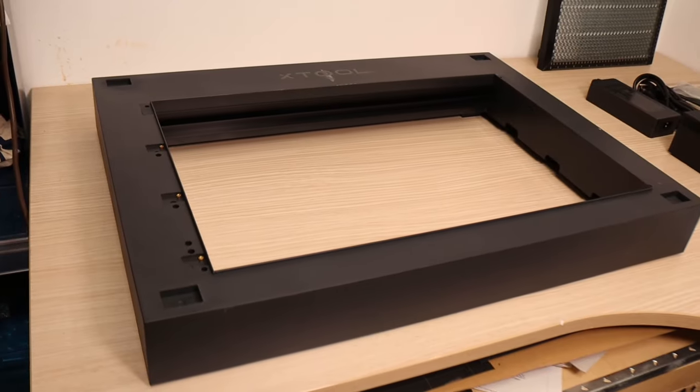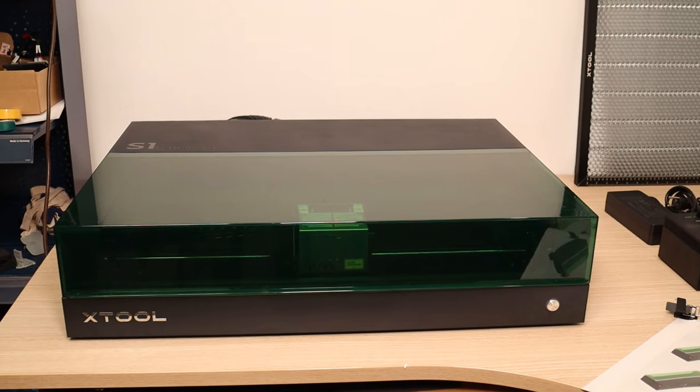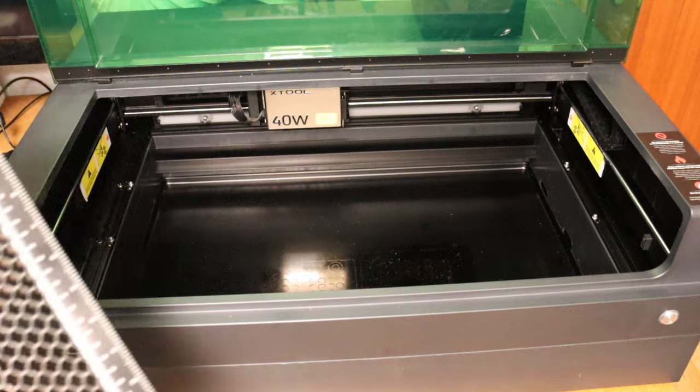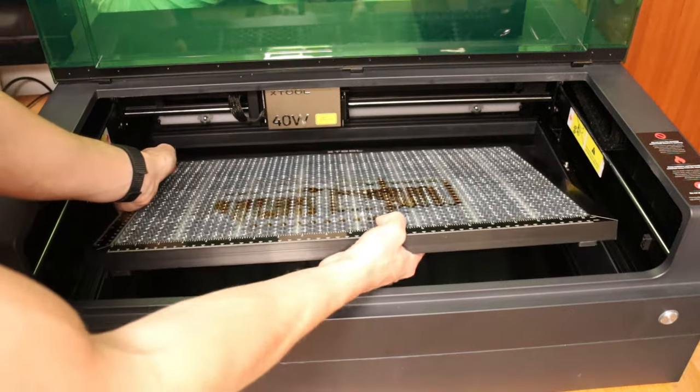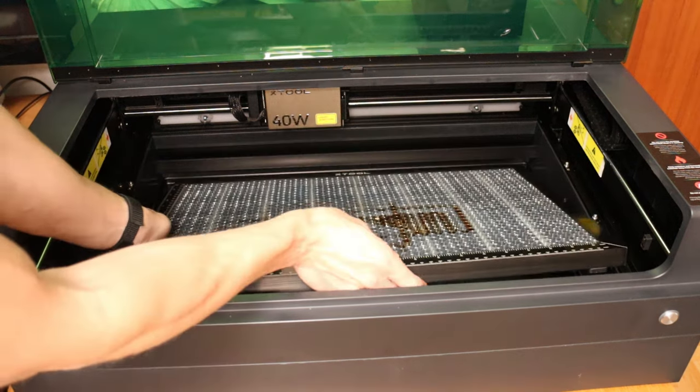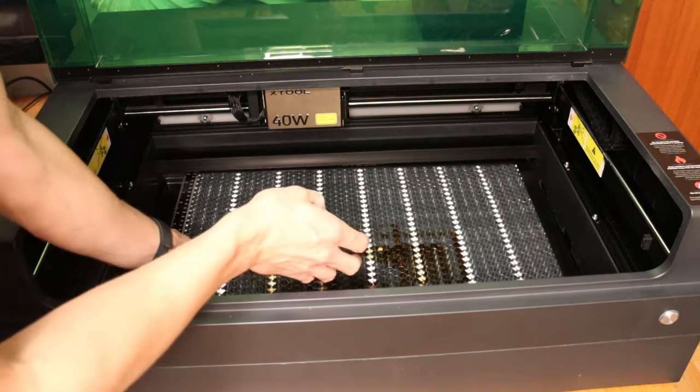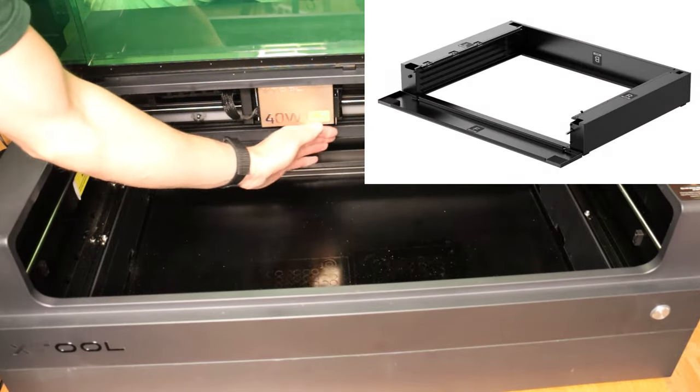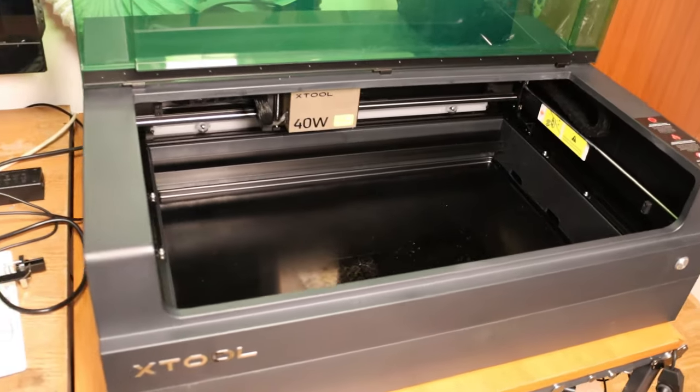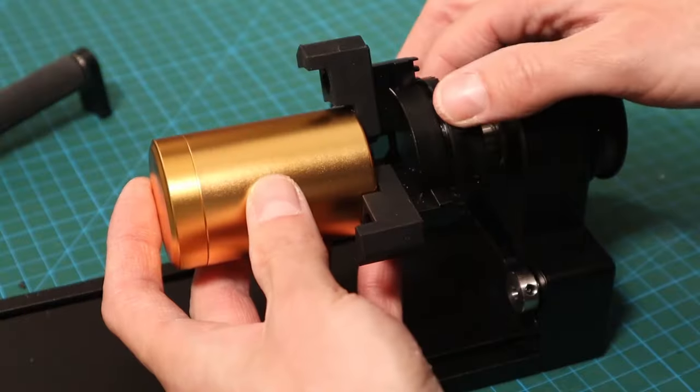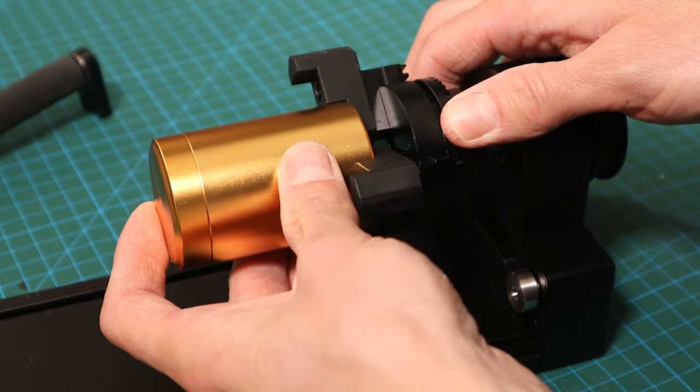If you want to engrave taller objects or use the rotary system, you can make the machine taller with a riser base. With the riser base, you can adjust the height of the honeycomb to two settings, enabling you to engrave taller objects up to 125mm, although the US version is different and has an adjustable base plate height and can support a bit taller objects. The use of riser base also enables you to use the rotary attachment, which I will showcase in my next video.